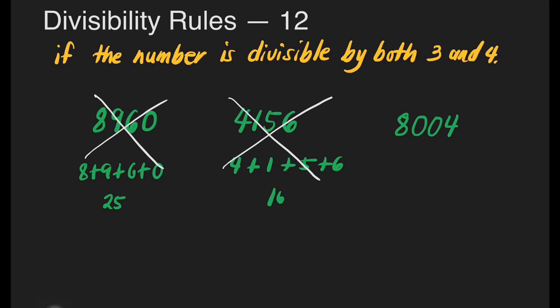Let us have the third number, 8,004. Let's check if this is divisible by 3. 8 plus 4 — we don't need to write the 0 to save time — 8 plus 4 is equal to 12. Is 12 divisible by 3? Yes. So possibly it's divisible by 12. The last two digits are 0 and 4. We can just divide 4 by 4 and that's 1, which means automatically this number is divisible by 12.